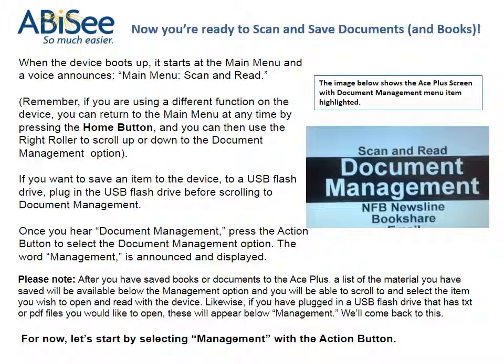Please note: after you have saved books or documents to the Ace Plus, a list of the material you have saved will be available below the management option, and you will be able to scroll to and select the item you wish to open and read. Likewise, if you have plugged in a USB flash drive that has TXT or PDF files you would like to open, these will appear below management. For now, let's start by selecting management with the action button.